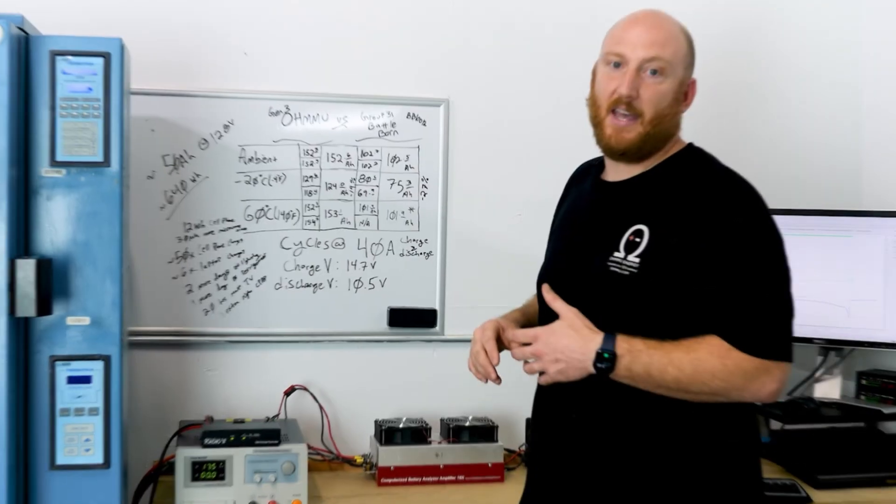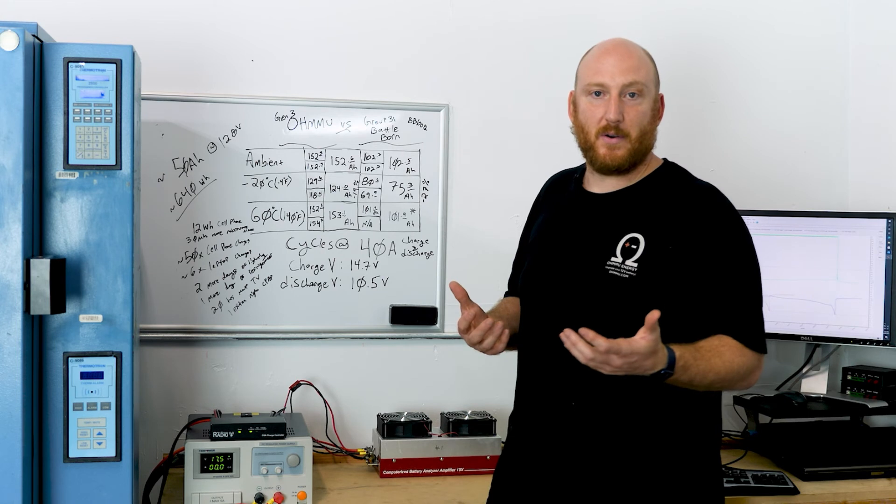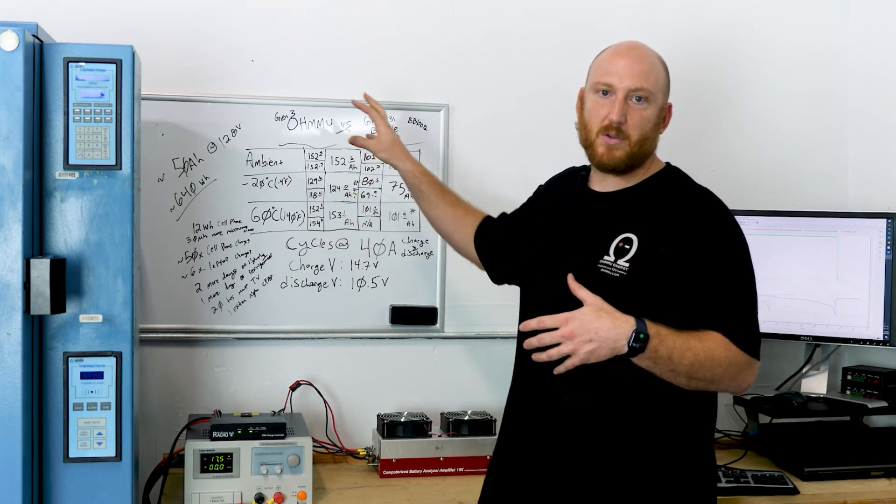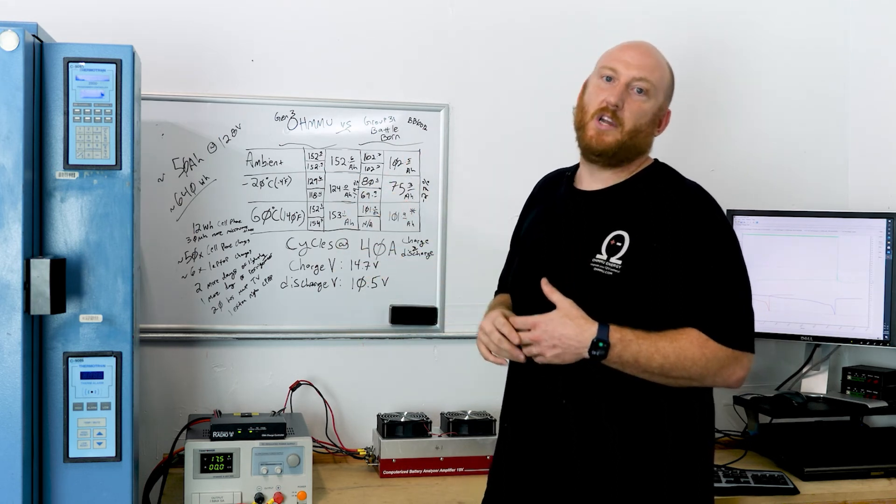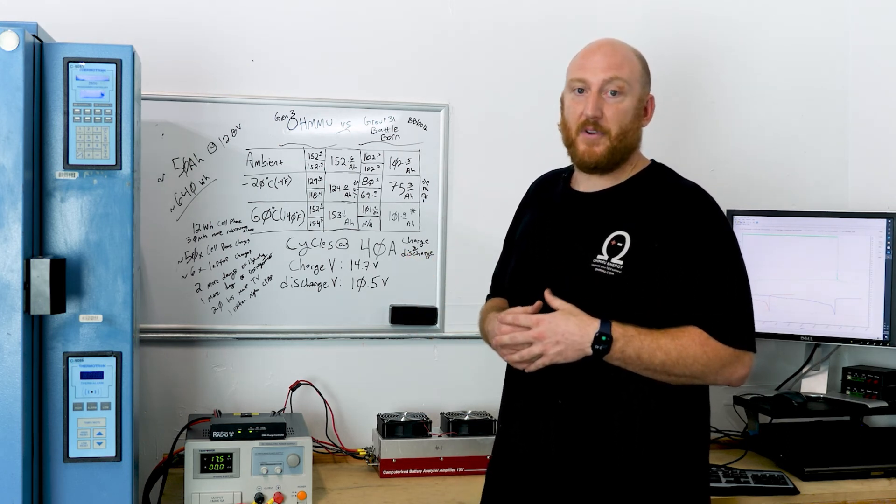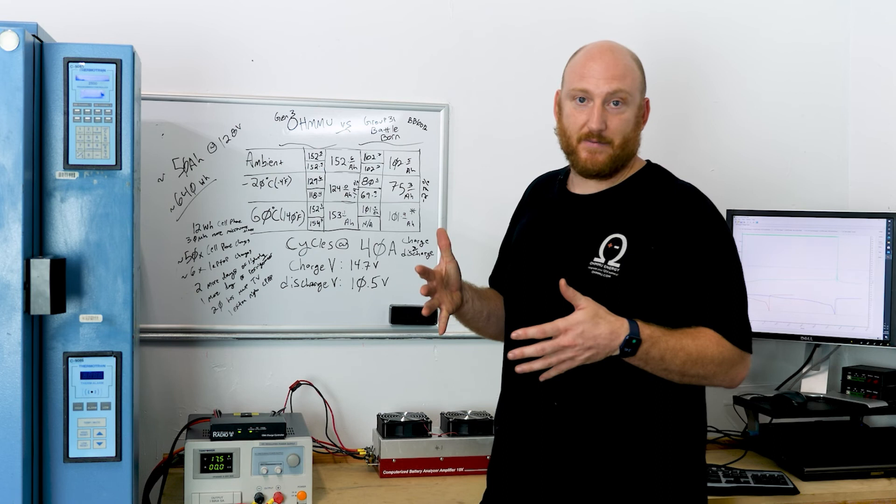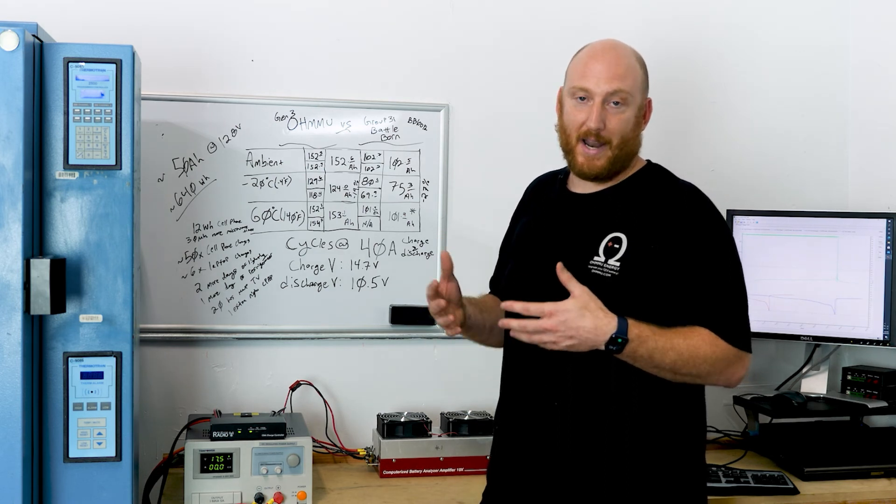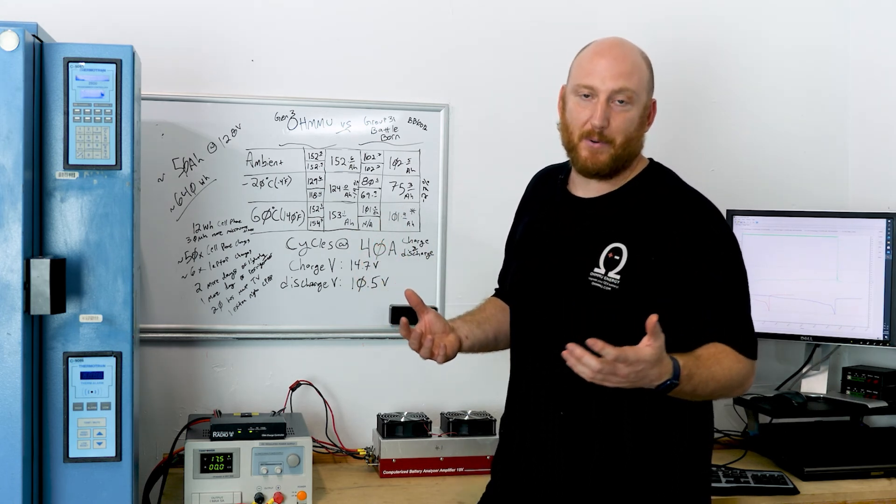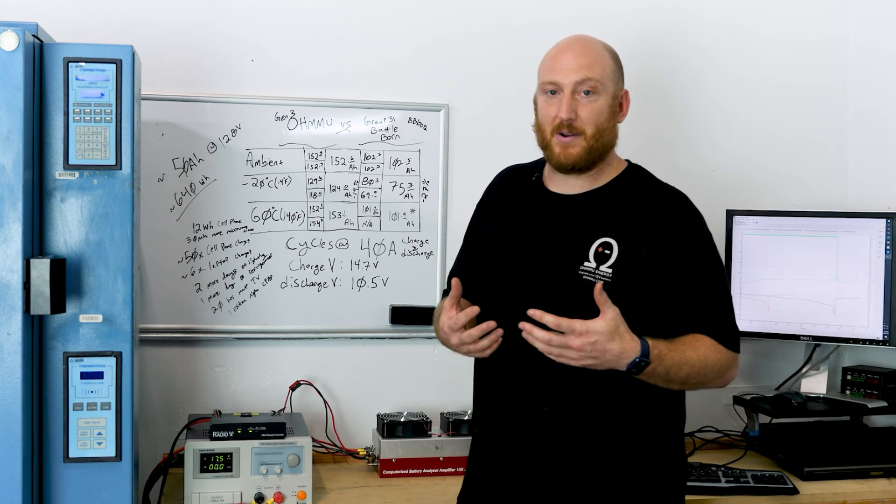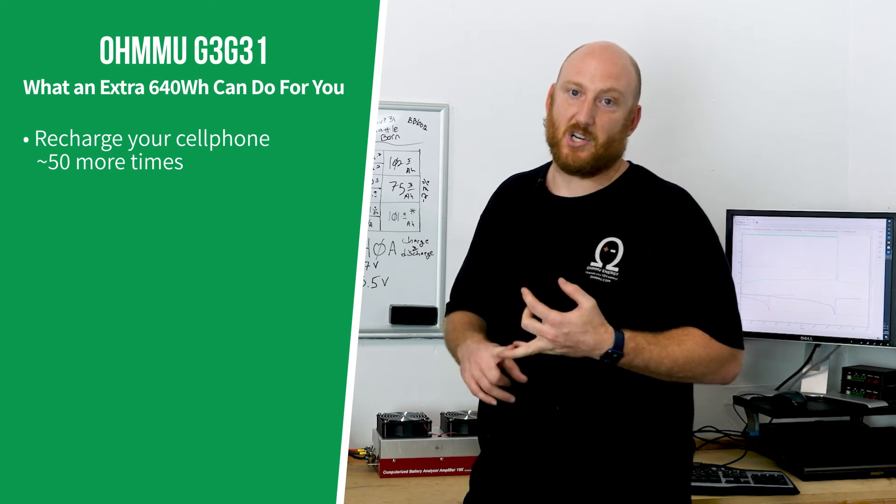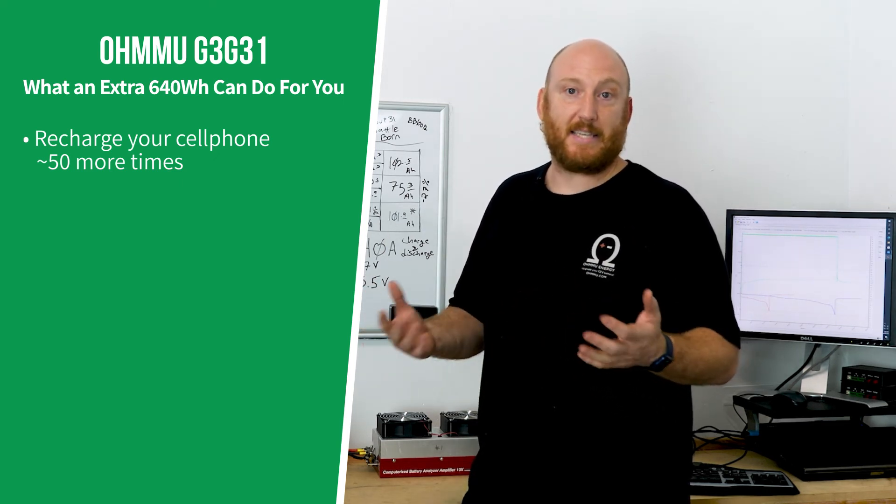That's what the data looks like and kind of how that would affect you. You're getting about, in most scenarios, at least 50 amp hours more usable capacity per each battery when you choose the Omu battery. 50 amp hours at 12.8 volts nominal is about 640 watt hours. 640 watt hours, there's a lot of numbers. That may not mean a lot to most people, but 640 watt hours can do a lot for you. That's like recharging your cell phone 50 times. That's recharging a laptop from completely empty to full at least six times.